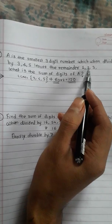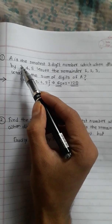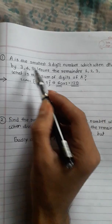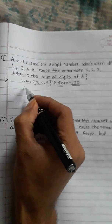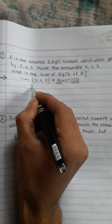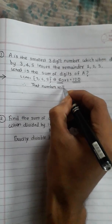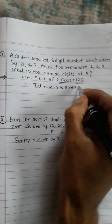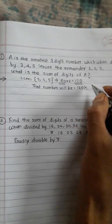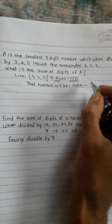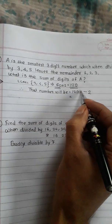The remainders are 1, 2, 3. These are the positive remainders. If we calculate the negative remainders: 3 minus 1 is 2, 4 minus 2 is 2, 5 minus 3 is 2. Therefore, that number will be 120k minus 2, where the negative remainder is 2.